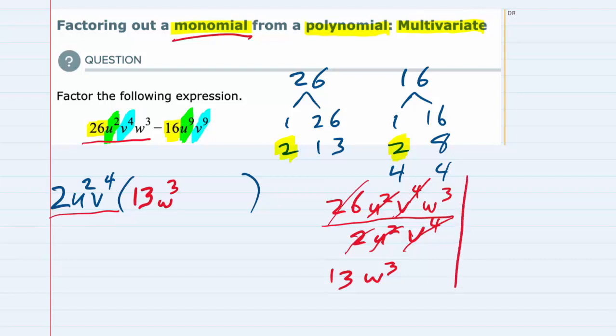Now for the second term, we have that minus 16u⁹v⁹. If I divide that by the term that I'm factoring out, the 2u²v⁴, the minus 16 divided by 2 is going to simplify to minus 8. The u⁹ and the u², you can think of this as the u² canceling two of those u's in the top. So I now have u⁷ left over. And for the v's, those 4v's cancel 4 of the v's in the top, leaving me with v⁵.